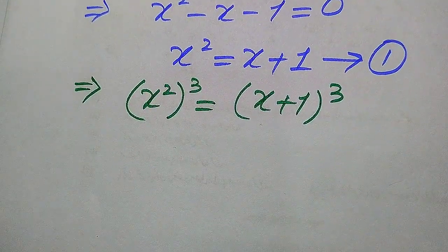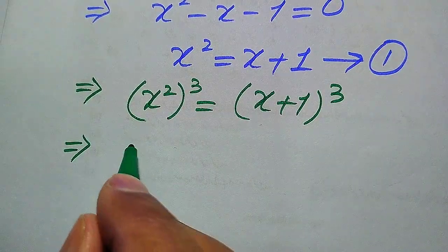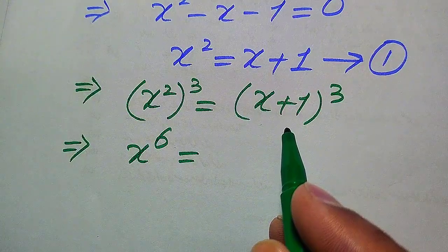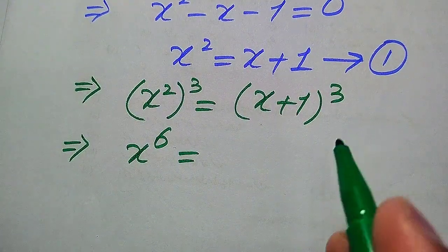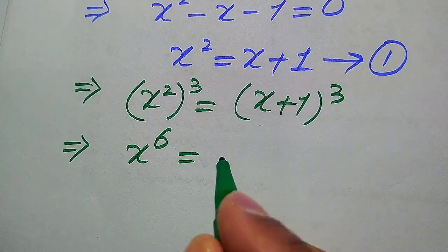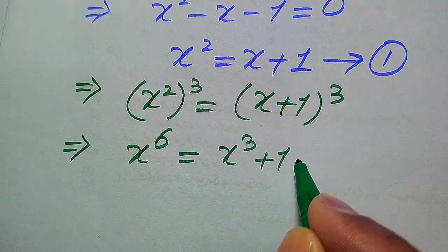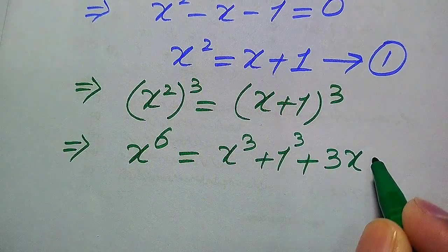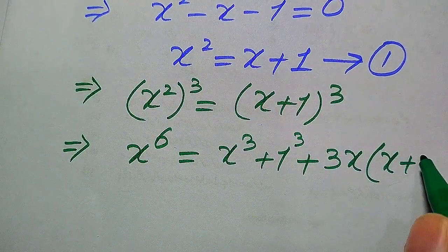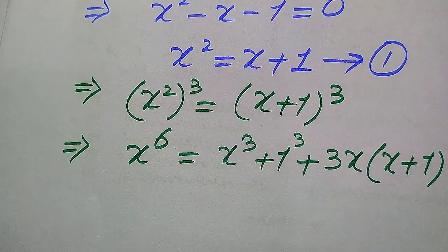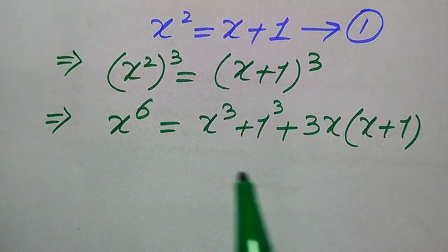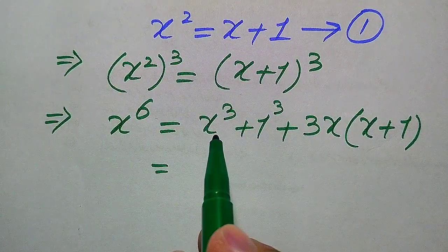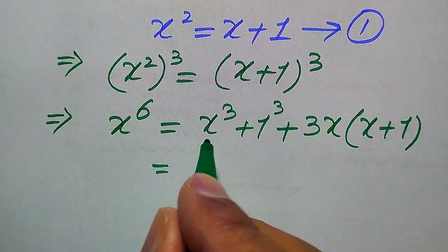On the left-hand side, 2 times 3 becomes 6, so we get x to the power of 6. On the right-hand side we apply the cubic formula (a + b)³ = a³ + b³ + 3ab(a + b). Applying this gives x cubed plus 1 cubed plus 3 times x times 1 times (x plus 1).